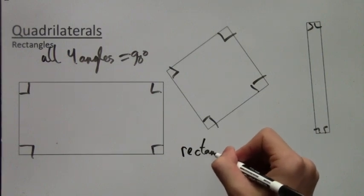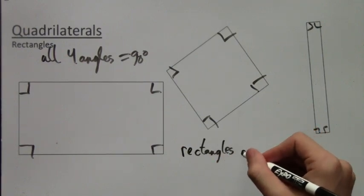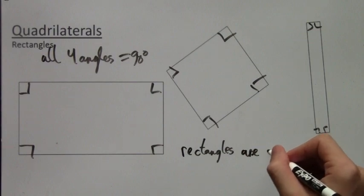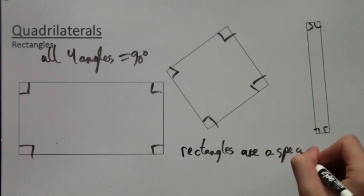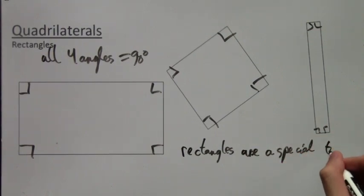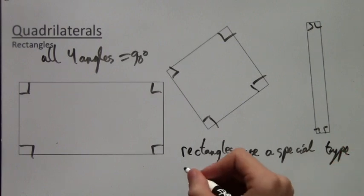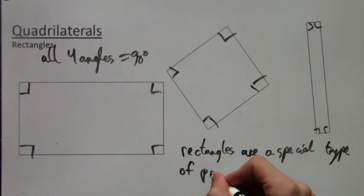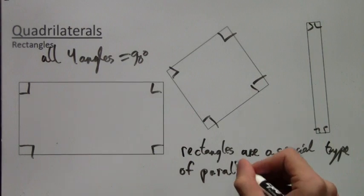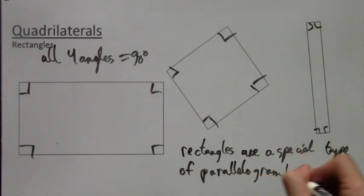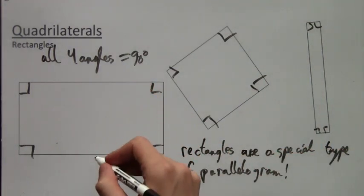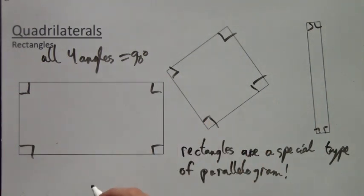And I'll notice that a rectangle is actually a special type of parallelogram. Not all parallelograms are rectangles, but all rectangles are parallelograms. You can just look, the opposite sides are all parallel. But anyway, that's just a little side note. The important part is that the four angles are equal to 90 degrees.